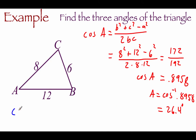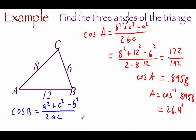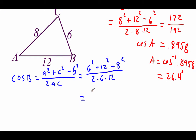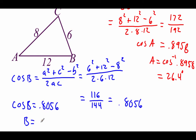For angle B, we use the formula: cosine of B equals A squared plus C squared minus B squared all over 2AC. Plugging in from our triangle, we've got 6 squared plus 12 squared minus 8 squared all over 2 times 6 times 12. Simplifying the top, we have 116; on the bottom we have 144. Dividing that out, we get 0.8056 — that's the cosine of B. Doing the inverse cosine of 0.8056, we get angle B to be about 36.3 degrees.